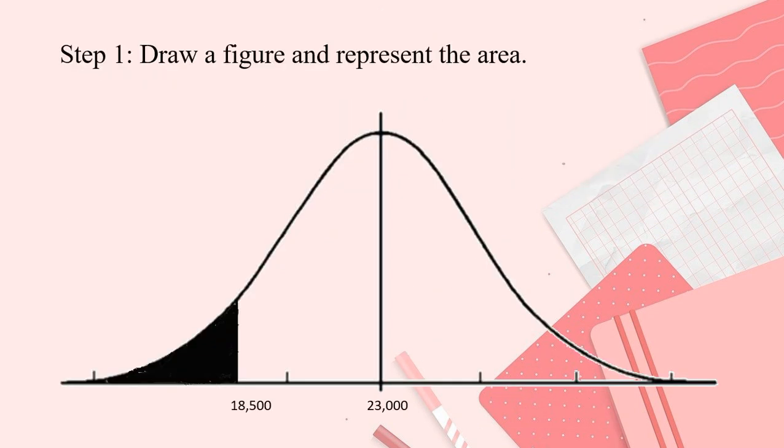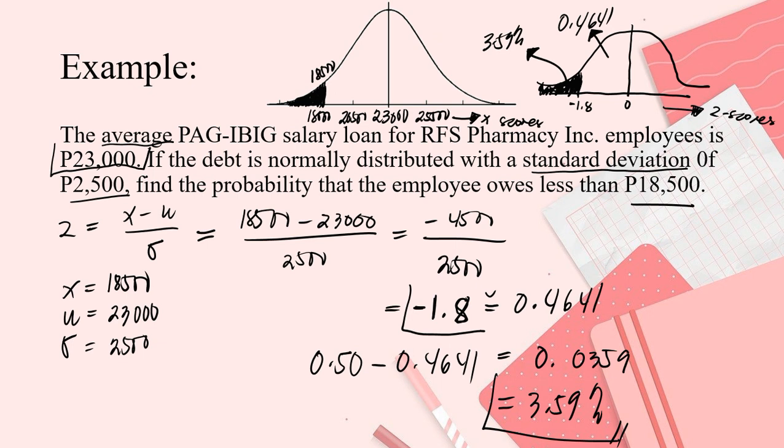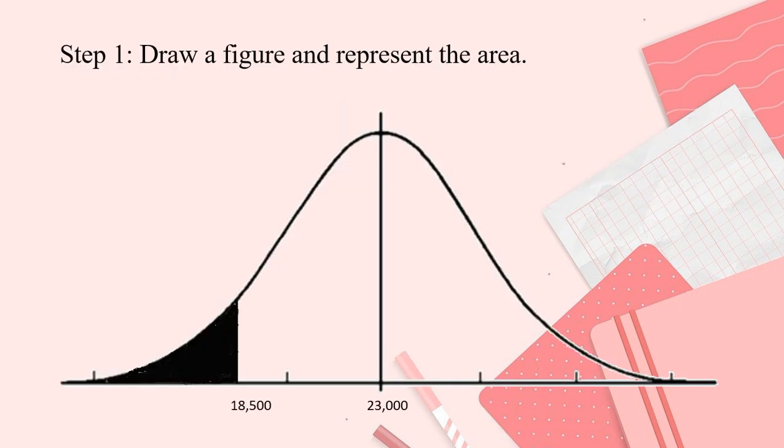Next. So here, I'll just show you the step by step, but we've already solved it completely. We got the final answer already. So your step 1 is the given mean, you will place it on the curve, then the given X which is 18.5. Then, shade the area being asked. That's step 1.